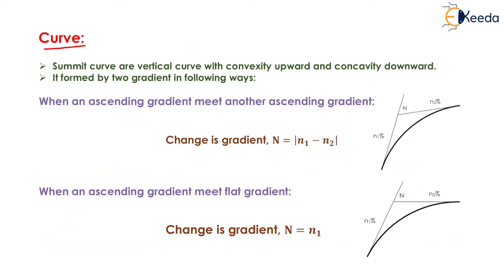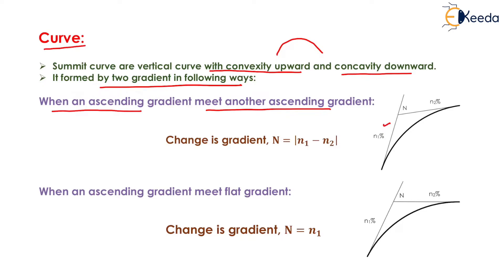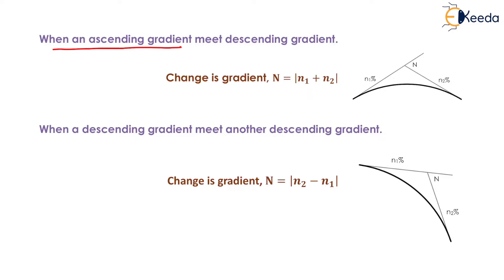The next vertical alignment element is the curve. Summit curves are vertical curves with convexity upward and concavity downward. They are formed by two gradients in the following ways: (1) ascending gradient meets another ascending gradient: N = |n1 − n2|; (2) ascending gradient meets flat gradient (n2 = 0): N = n1; (3) ascending gradient meets descending gradient (+n1% and −n2%): N = n1 + n2.